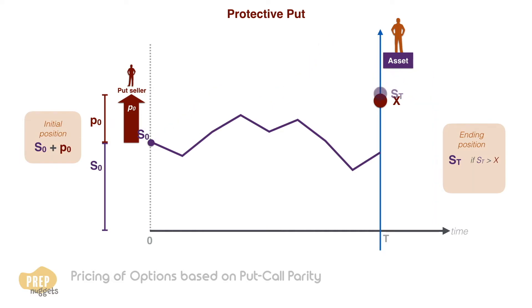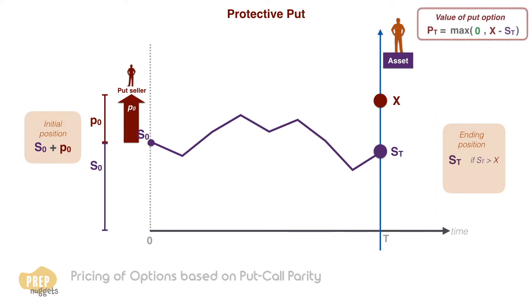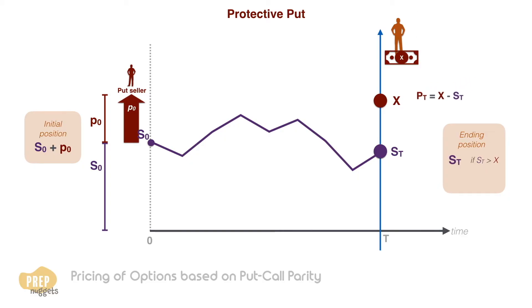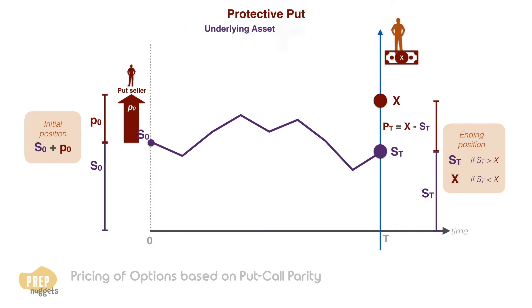If St ends up lower than the exercise price, the investor would exercise the put. He will sell the asset for x. Under this scenario, where the put option expires in the money, the investor's ending position becomes x. So in essence, a protective put is a strategy made up of a long position in the underlying asset coupled with a long position in the put option.